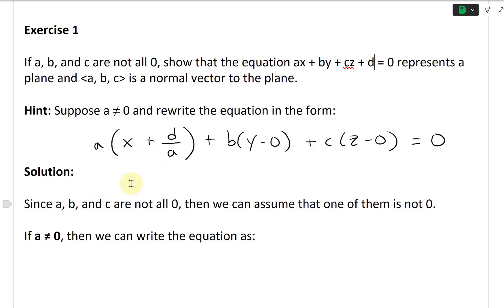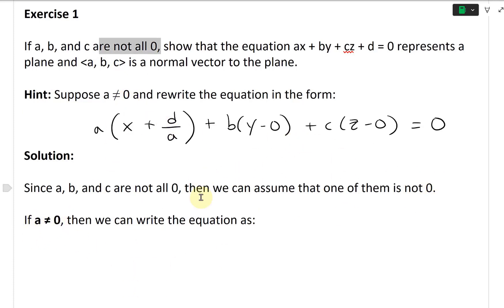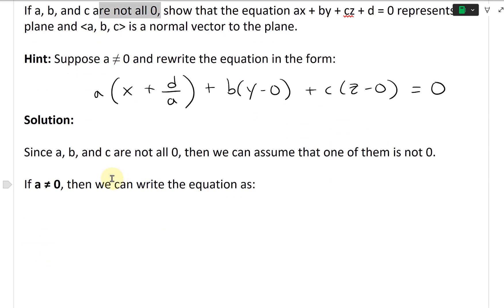Solution: Since a, b, and c are not all zero, then we can assume that one of them is not zero. Let's assume a is not zero. If it's not a, we could do b or c, doesn't matter. The result will be true if at least one of them is non-zero.